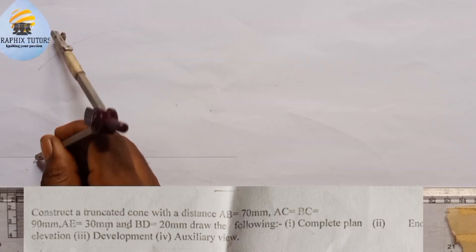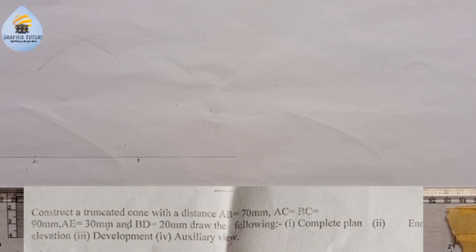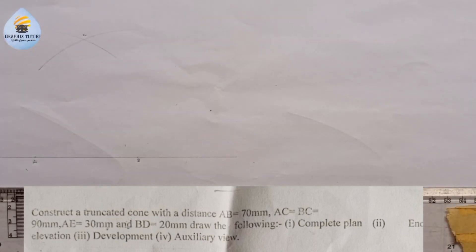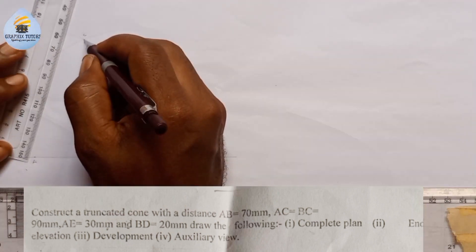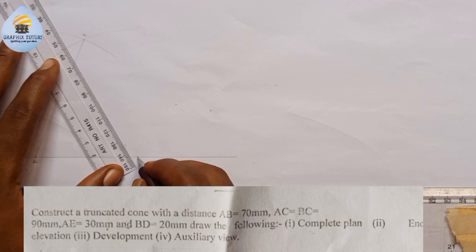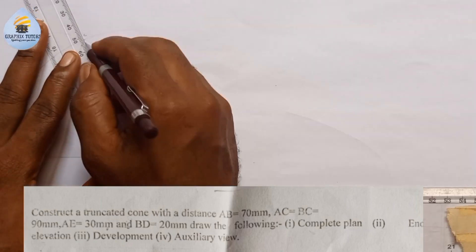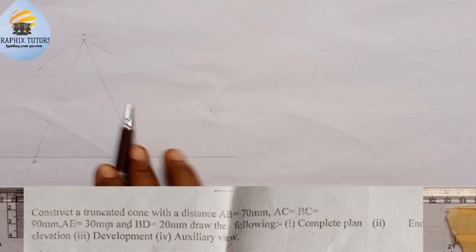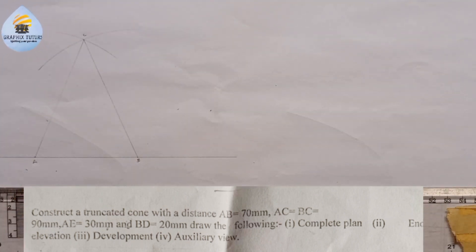I'm going to join them with my faint line first of all, this way. Then I will join them this way. Now this is an isosceles triangle. We have two of its sides equal.